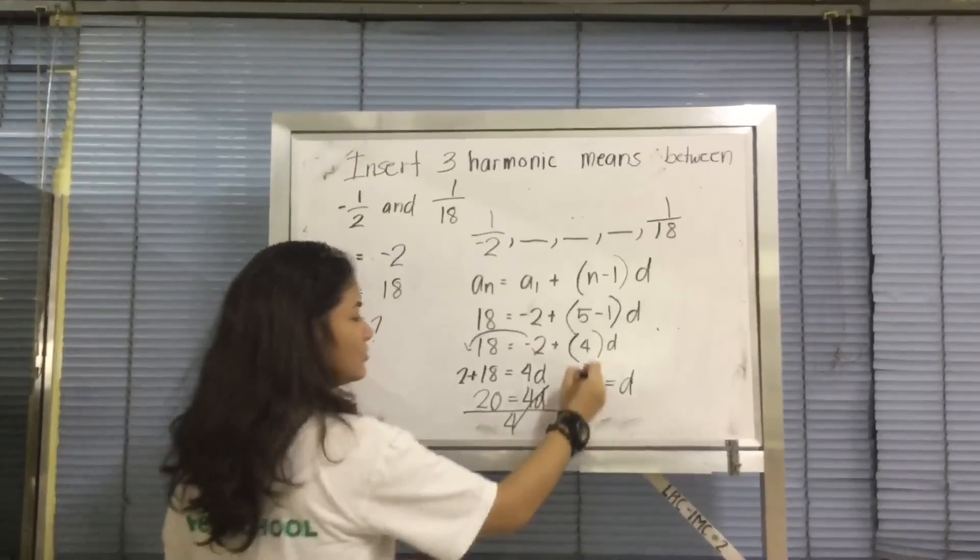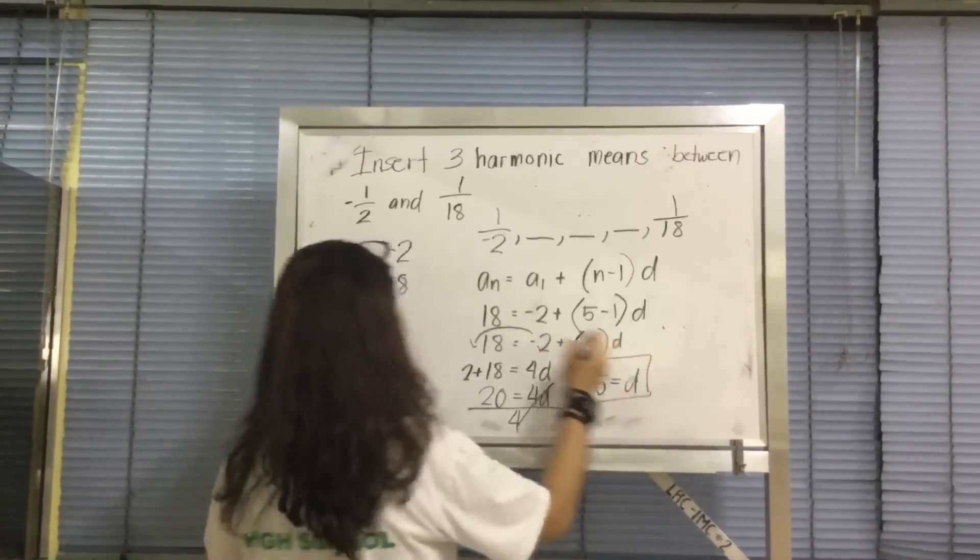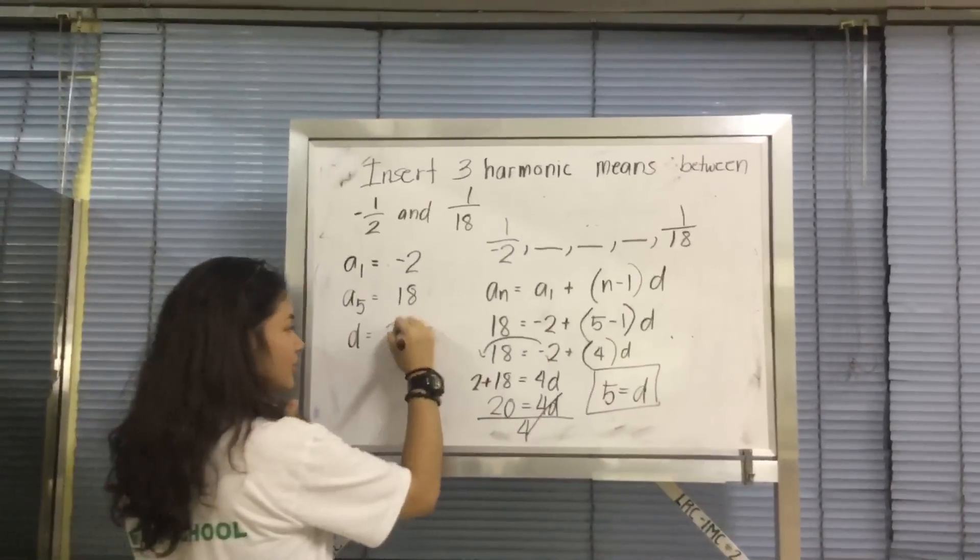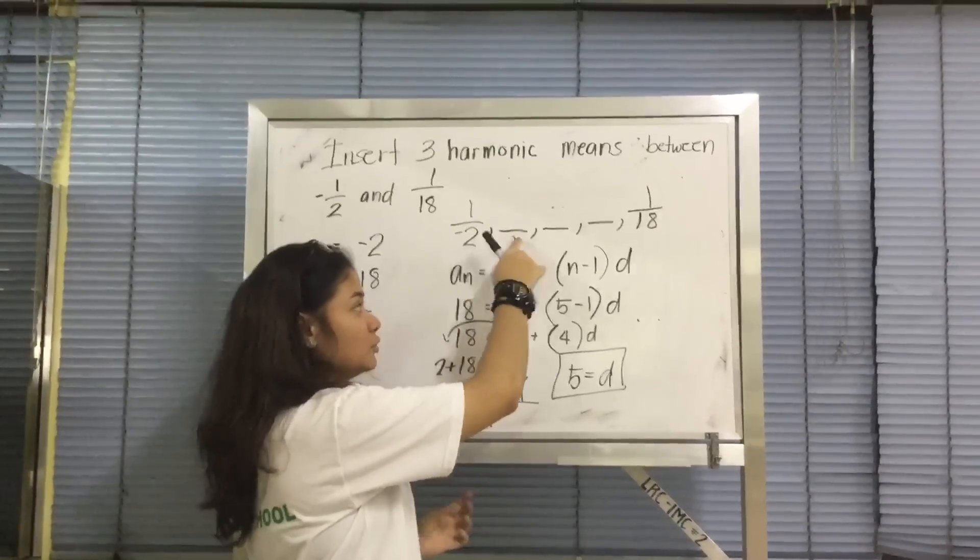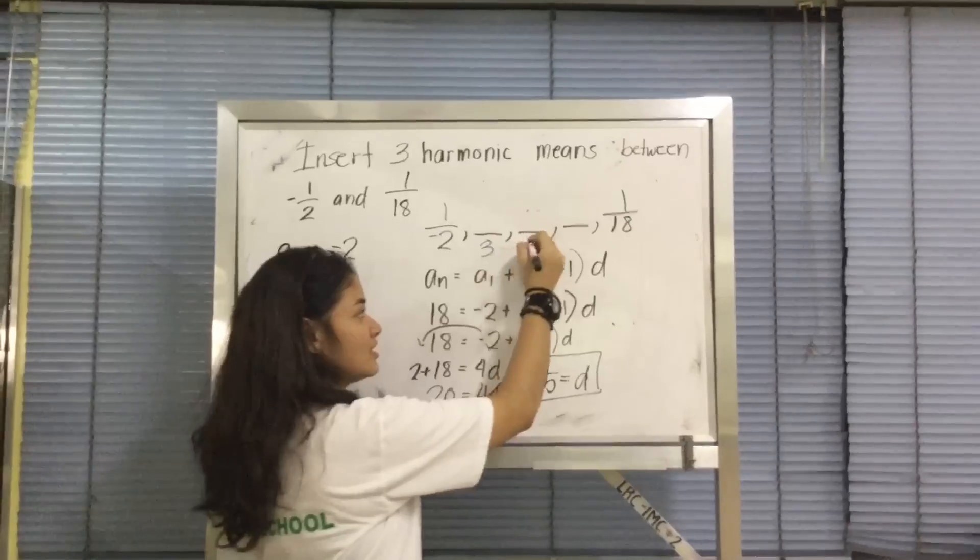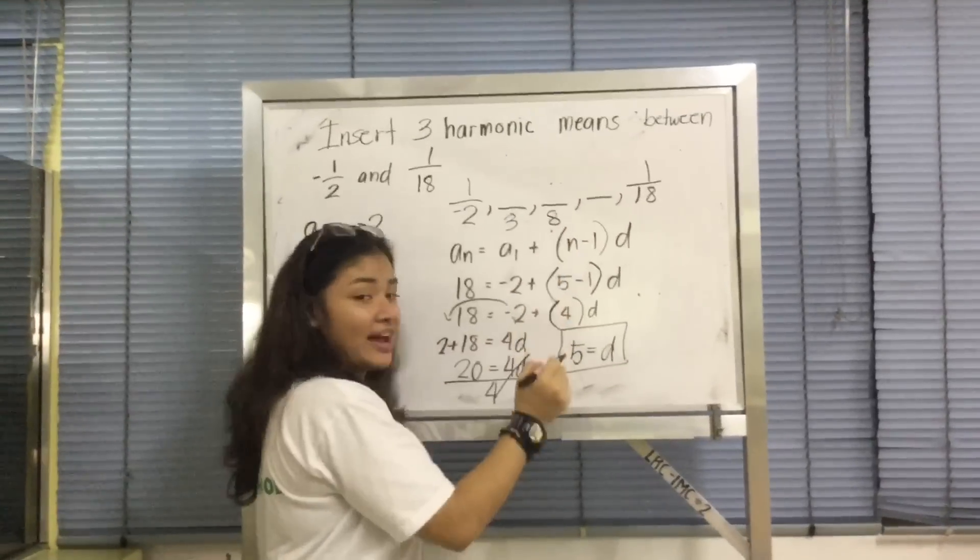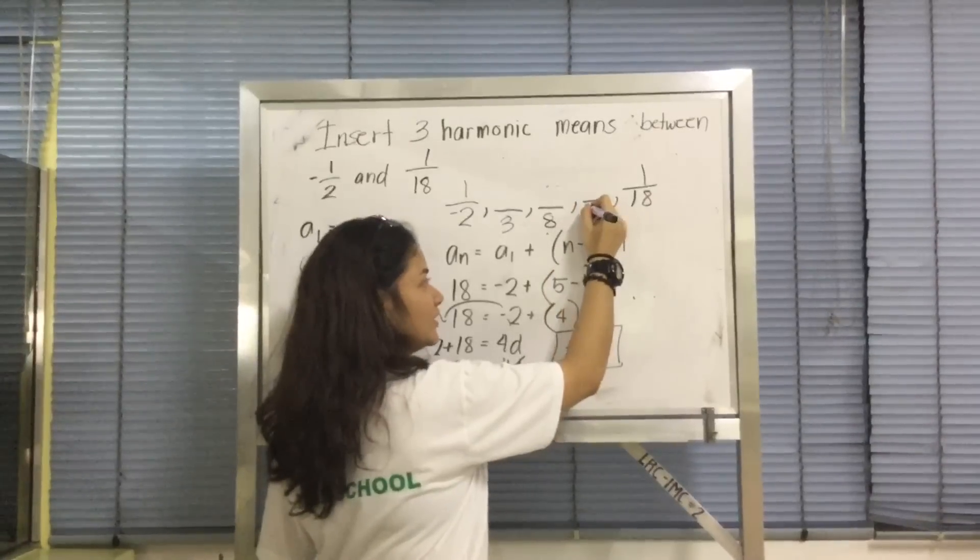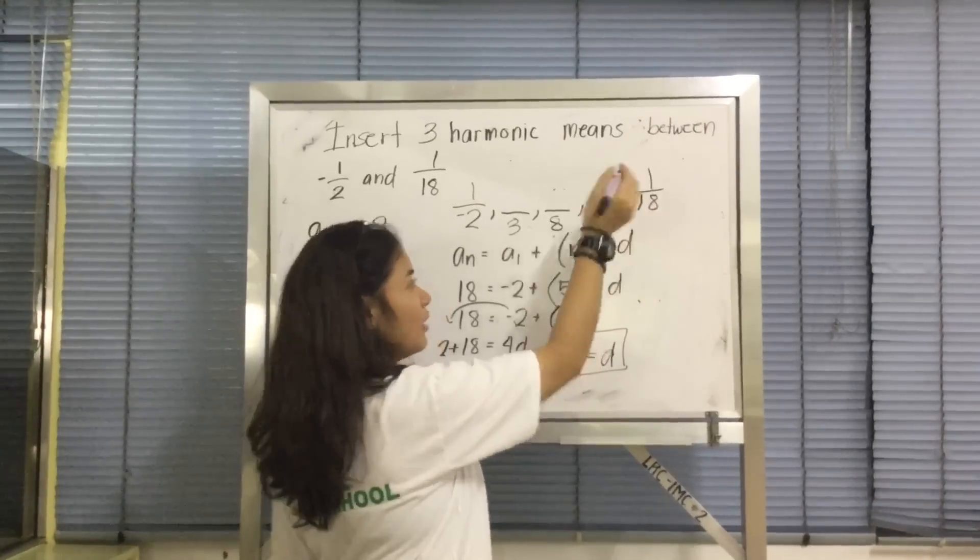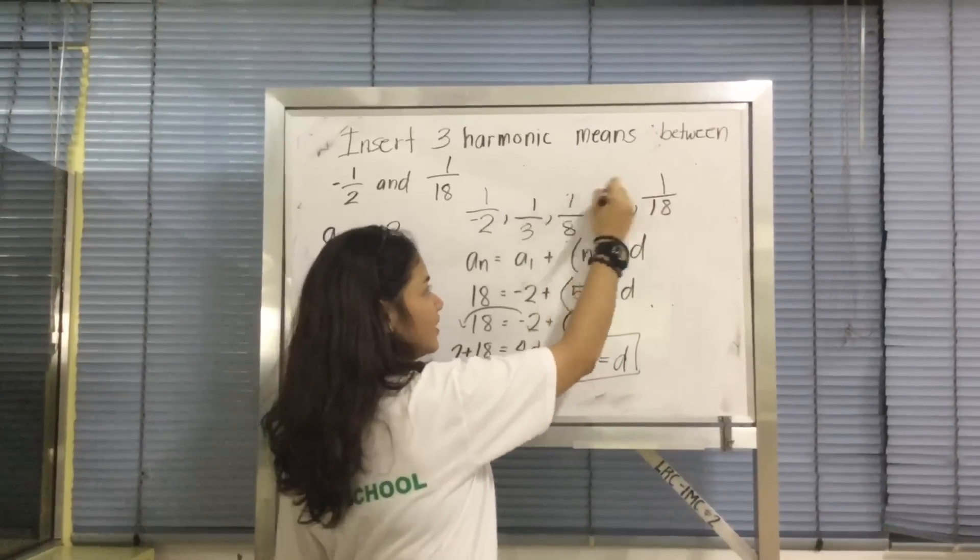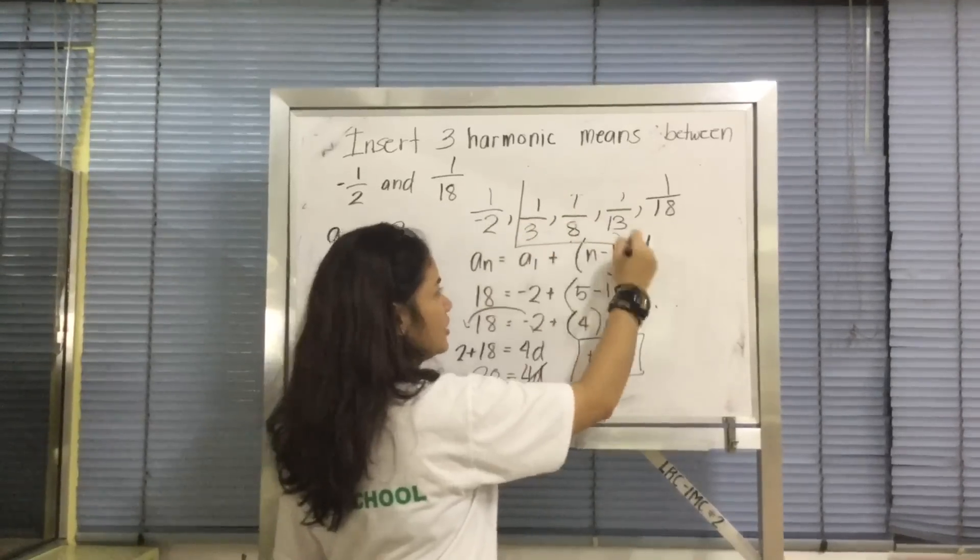Now, what you do is since you got the difference, which is 5, now 5 plus negative 2 is 3. 5 plus 3 is equal to 8. 8 plus 5 is equal to 13. And 13 plus 5 is equal to 18. Now you put the numerator, and this is your harmonic mean.